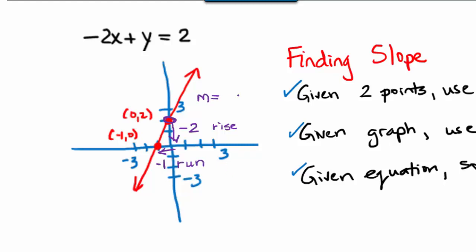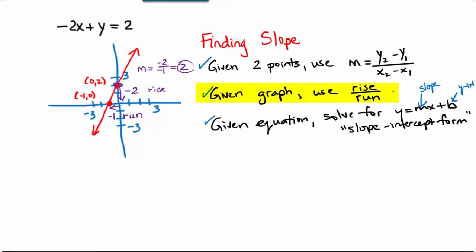This means that our slope, which is rise over run, would be negative 2 divided by negative 1, which still turns out to be a positive 2. So using this rise over run method, we get a slope of positive 2.